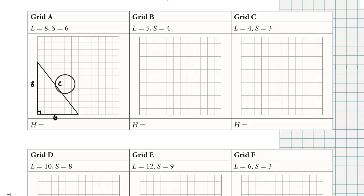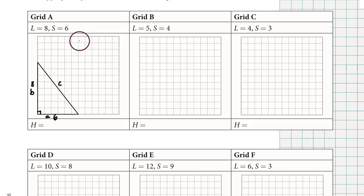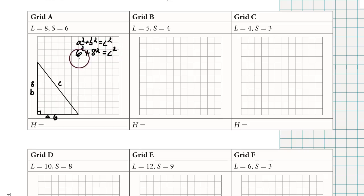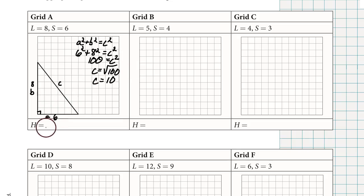The hypotenuse of the triangle is the letter C in the Pythagorean theorem, or in this case the letter H for hypotenuse. The shortest leg is the letter A and the longer leg is the letter B. From a previous lesson, we have A squared plus B squared equals C squared. This gives us 6 squared plus 8 squared equals C squared. 36 plus 64 is 100 equals C squared. Taking the square root of 100, C is 10. The hypotenuse of the triangle is 10, and there's a spot to record that underneath the picture.